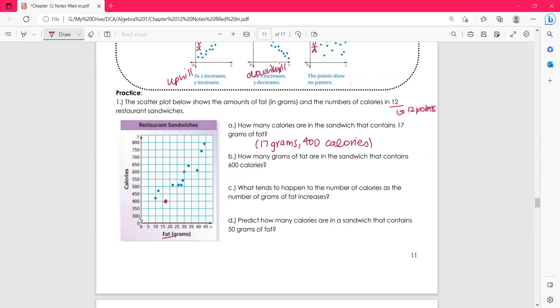How many grams of fat are in the sandwich that contains 600 calories? So I'll go to 600 calories, brings me about right here. And then if I go down, we've got 30 grams of fat. So we're using the points using the horizontal and the vertical axis. What tends to happen to the number of calories as the number of grams of fat increases? So here, these numbers are increasing, right? So as these are increasing, notice the calories are also increasing. Calories increase.